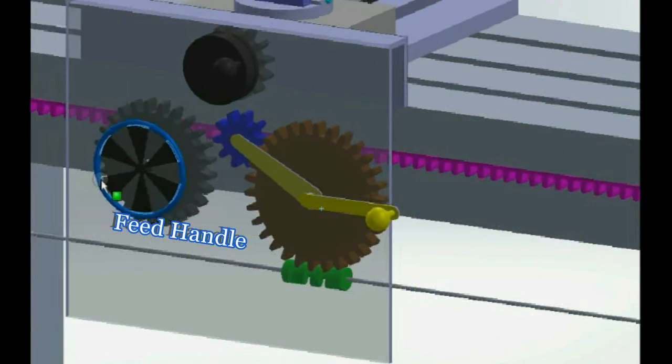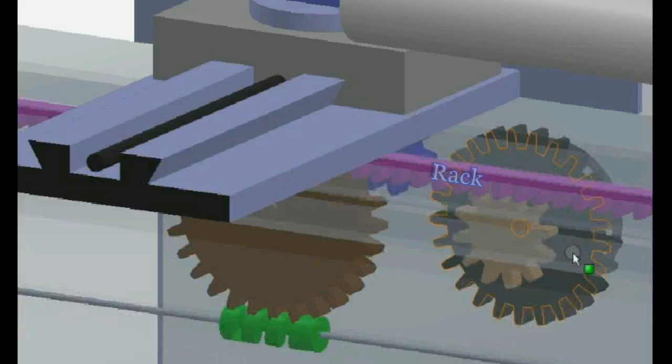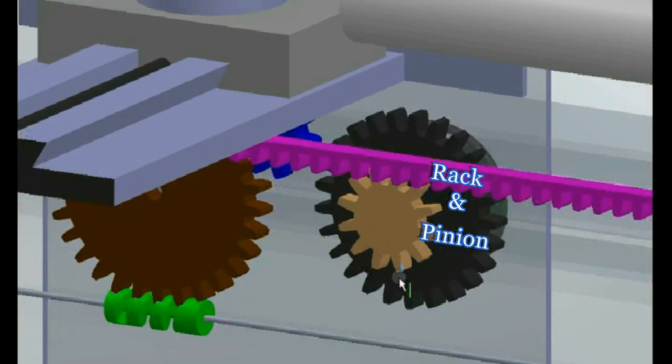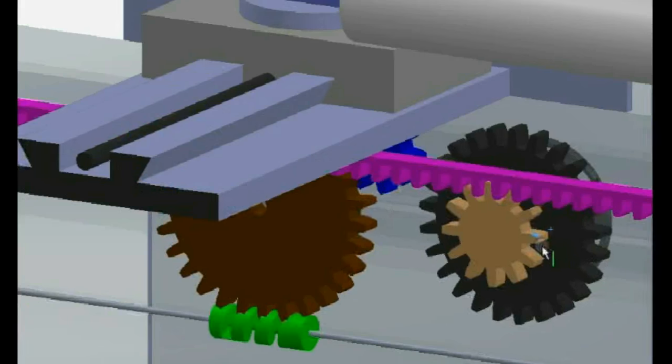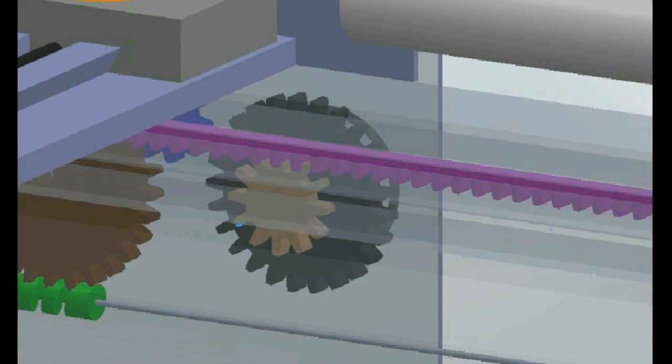There is a gear behind the handle which mates with a rack on the bed, so there is a rack and pinion joint in which the pinion gear moves with respect to the rack and takes along the whole carriage.